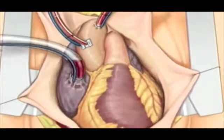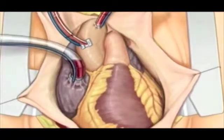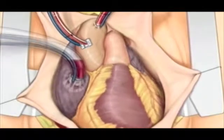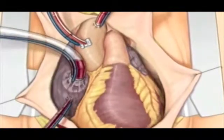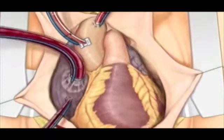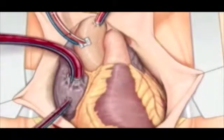The surgeon places a cannula in the right atrium, vena cava, or femoral vein to withdraw blood from the body. The cannula is connected to tubing filled with isotonic crystalloid solution. Venous blood that is removed from the body by the cannula is filtered, cooled, oxygenated, and then returned to the body.